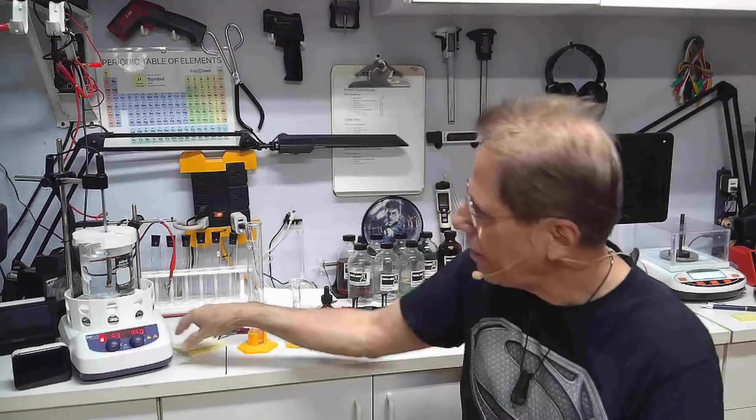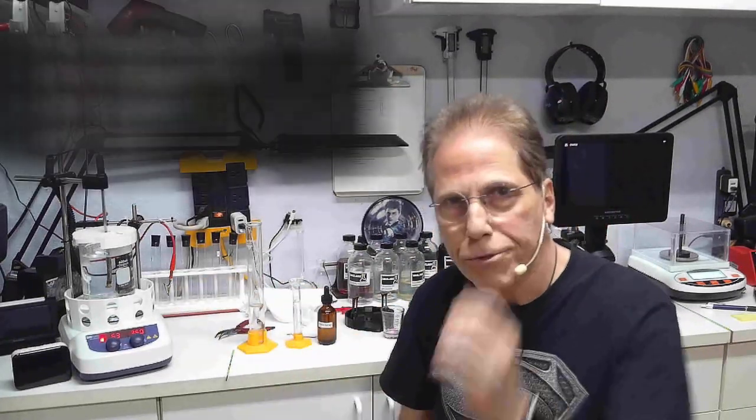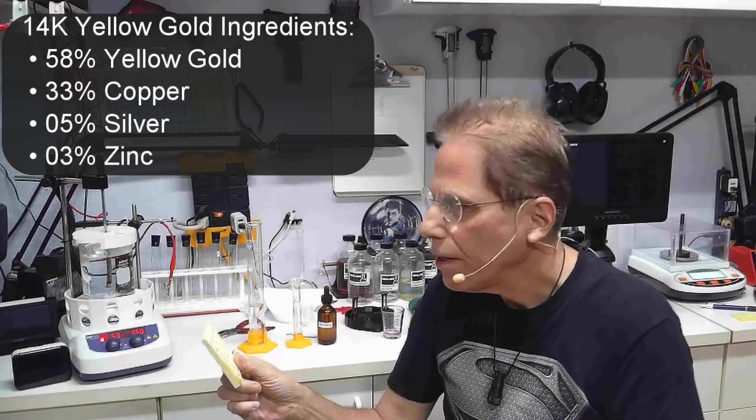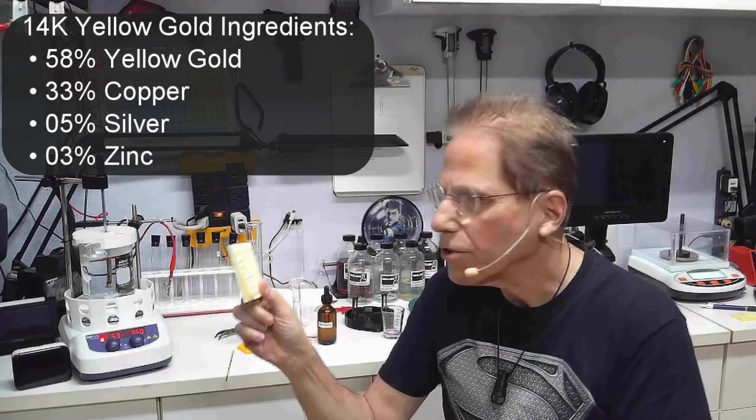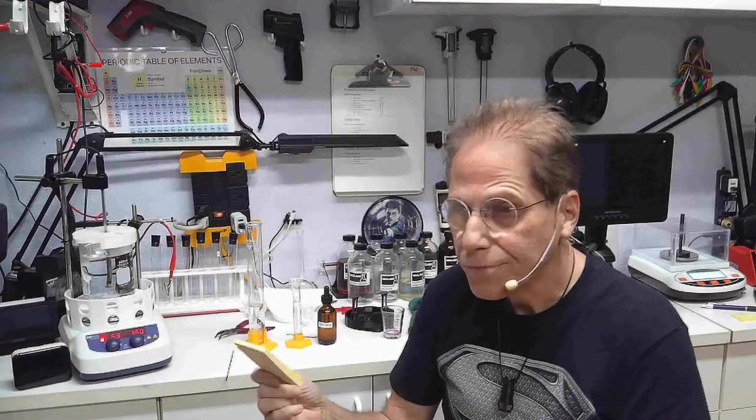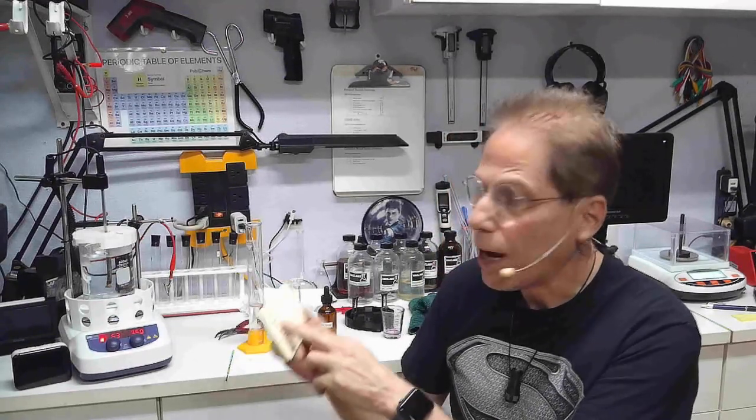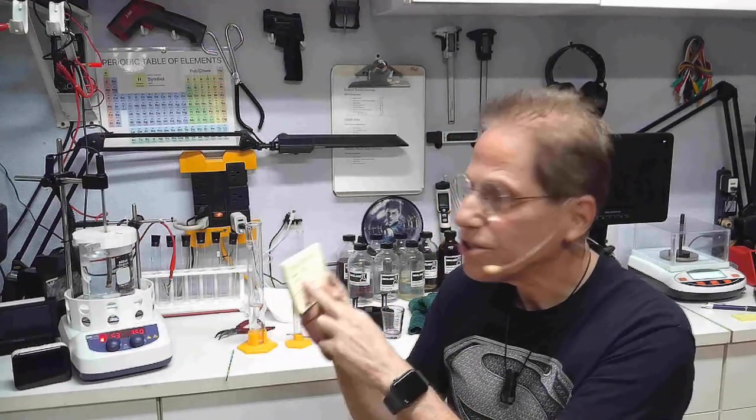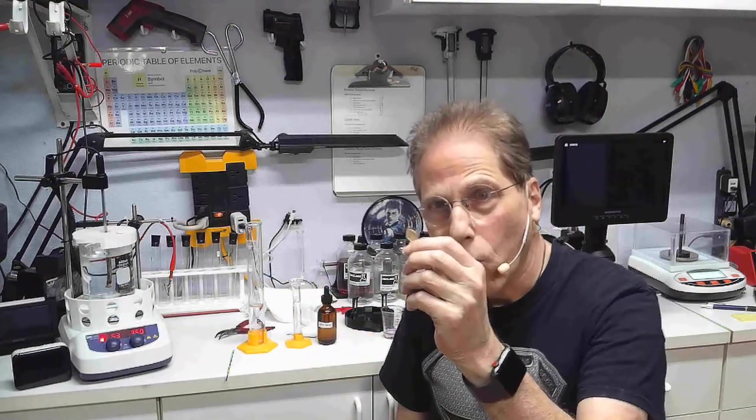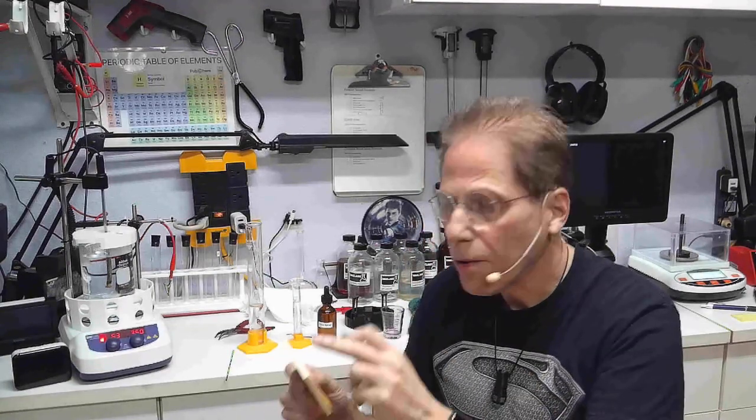14-carat yellow gold is composed of 58% gold, 33% copper, 5% silver, and 3% zinc. Now, as we know, if you've been following my shows, we cook copper, we cook silver, and we cook zinc. So this whole piece of 14-carat gold, even though it's an amalgam, has all the metals in it that our body is able to digest.